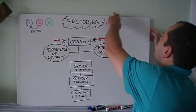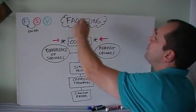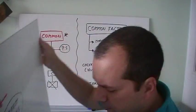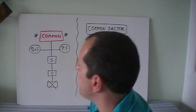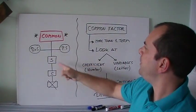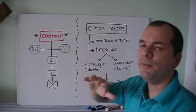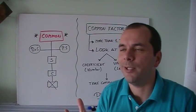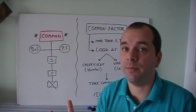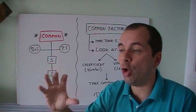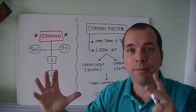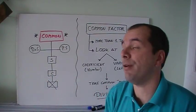So today, just common factor. What is common factor? In order to have something in common, you need to have more than one term. Because we're looking for something that's common in all terms. All two terms, all three terms, all four terms, however many there are.